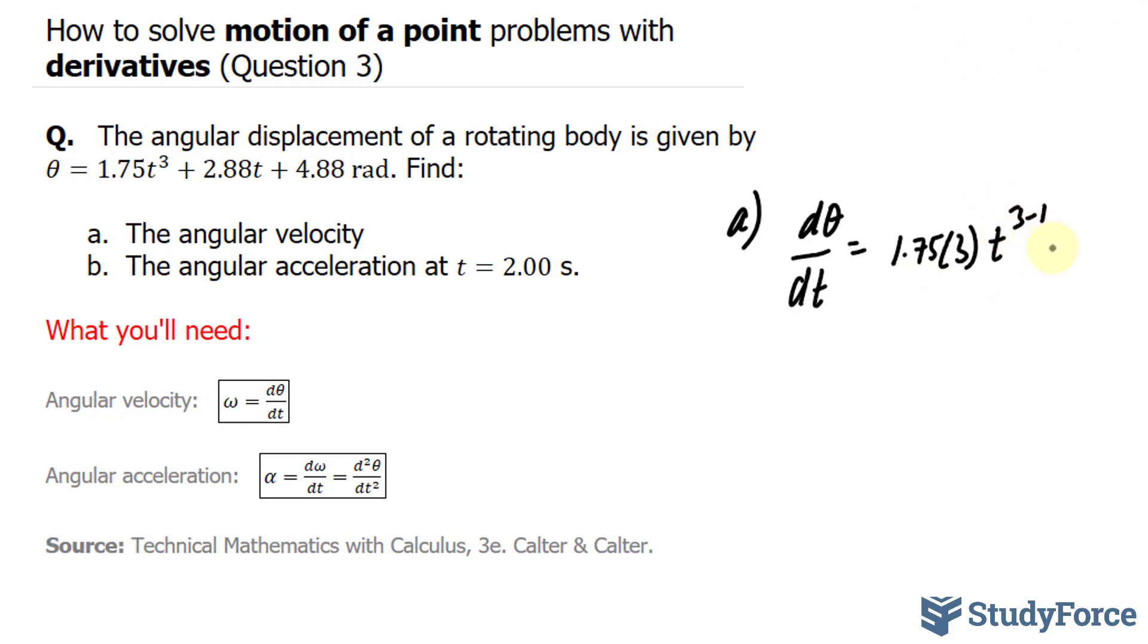I'll evaluate this later, plus 2.88, and the t goes away. We've used the power rule for the first two terms, and since that last term is a constant, it becomes 0 when you take its derivative.